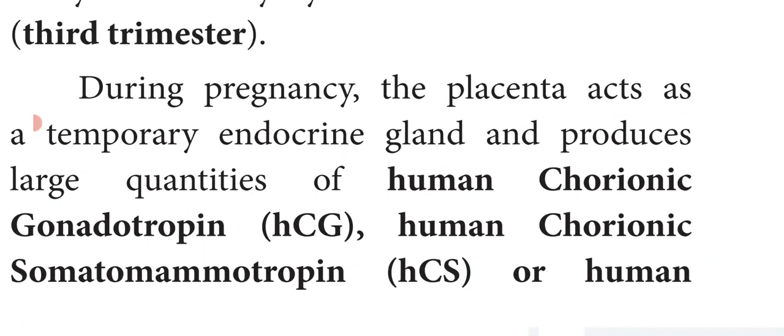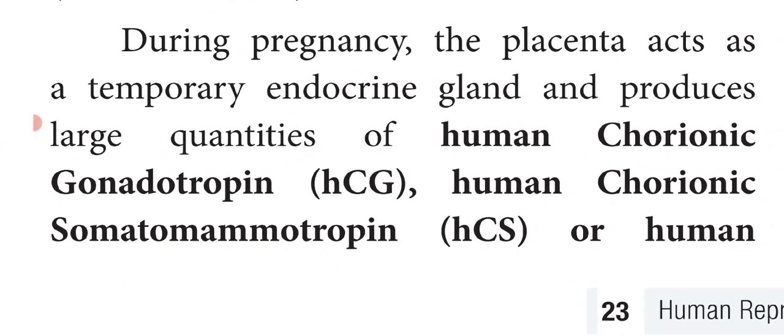During pregnancy, the placenta acts as a temporary endocrine gland. The placenta is formed only during pregnancy and its main function is to fulfill the nutritive, respiratory and excretory functions of the fetus. It is called a temporary endocrine gland because it acts as an endocrine gland only during pregnancy, secreting hormones.